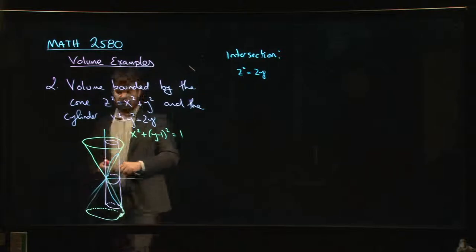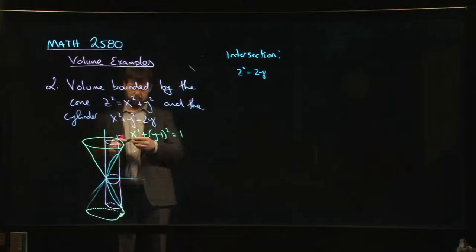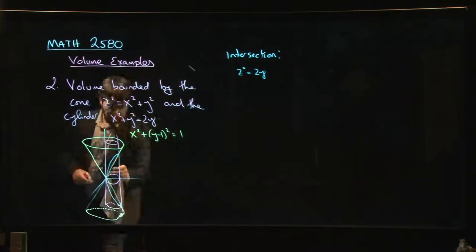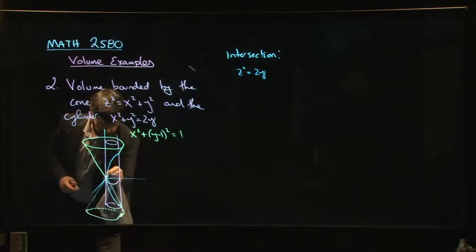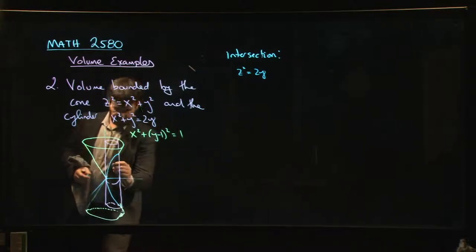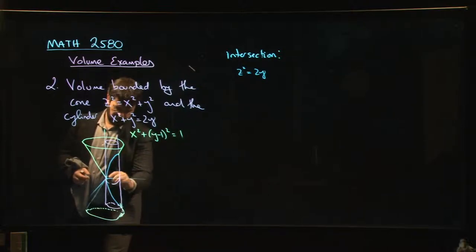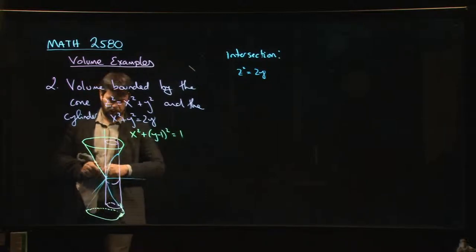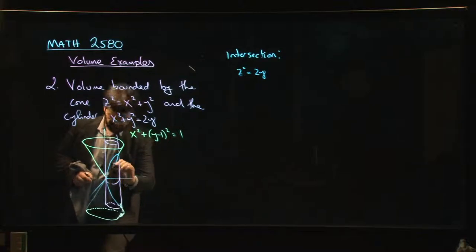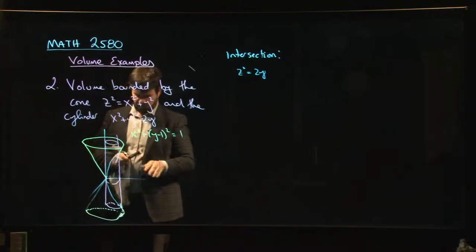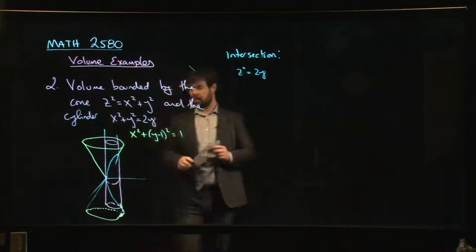And now you can start to see what the solid that you're trying to find the volume of, what it looks like. Let me grab a cloth. If we erase this bit of the cone, well now you can kind of see it. The solid that we're trying to calculate here is this bit of cylinder. So it's this part of the cylinder which is in here to there. And so basically there's kind of a bit on the other side. It's hard to draw. So it's this wedge cut out here that we're trying to find the volume of.